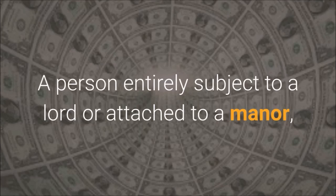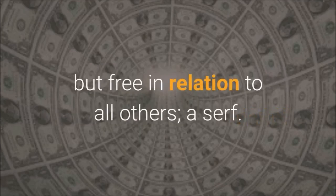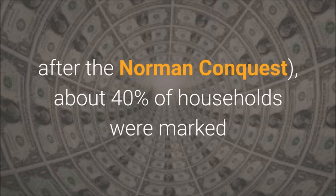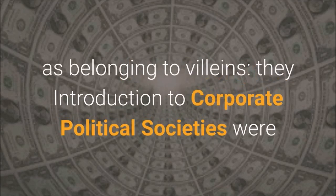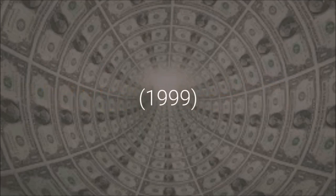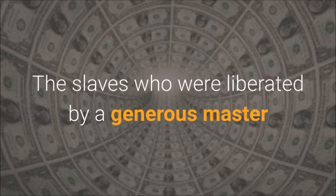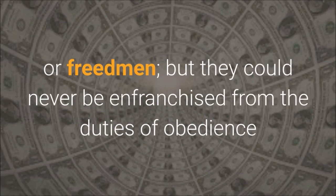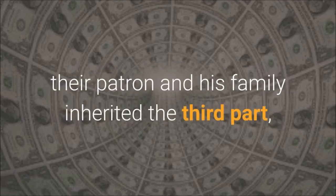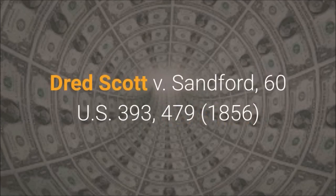Villain: A person entirely subject to a lord or attached to a manor, but free in relation to all others — a serf. At the time of the Doomsday Inquest, shortly after the Norman Conquest, about 40% of households were marked as belonging to villains, who were the most numerous element in the English population. Black's Law Dictionary, 7th ed., 1999. The slaves who were liberated by a generous master immediately entered into the middle class of Libertini or Freedmen, but they could never be enfranchised from the duties of obedience and gratitude. Whatever were the fruits of their industry, their patron and his family inherited the third part, or even the whole of their fortune, if they died without children and without a testament. Dred Scott v. Sanford, 60 U.S. 393, 479.